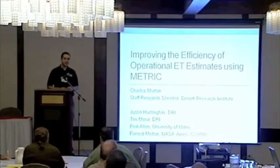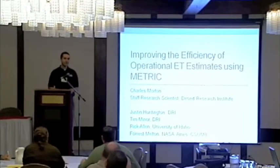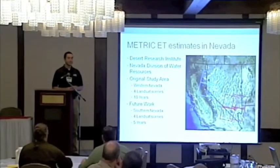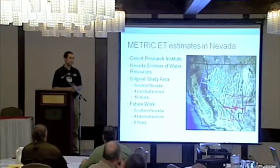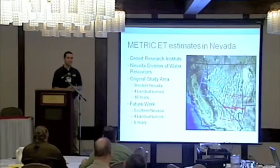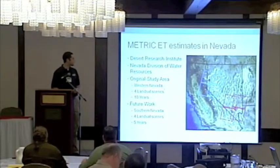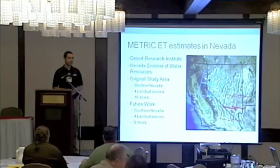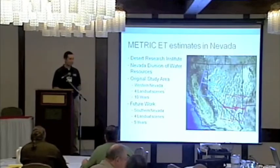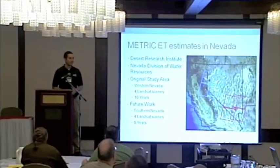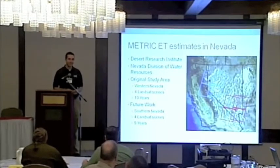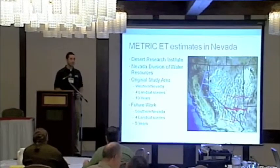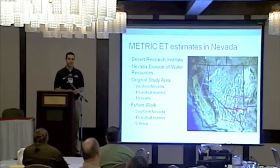I want to talk about some efforts we're making to improve the efficiency of generating operational ET estimates. The Desert Research Institute and the Nevada Division of Water Resources are working together to apply METRIC in western Nevada. That was our original project — four Landsat scenes in blue — and we're applying it over ten years across two UTM zones. We're also expanding to apply METRIC in southern Nevada, tentatively five years. The ten-year start for the original study is when the reference ET site went in at Fallon, so before that there wasn't much data to apply the model. Our effort has been to generate estimates in-house as well as to support the state.